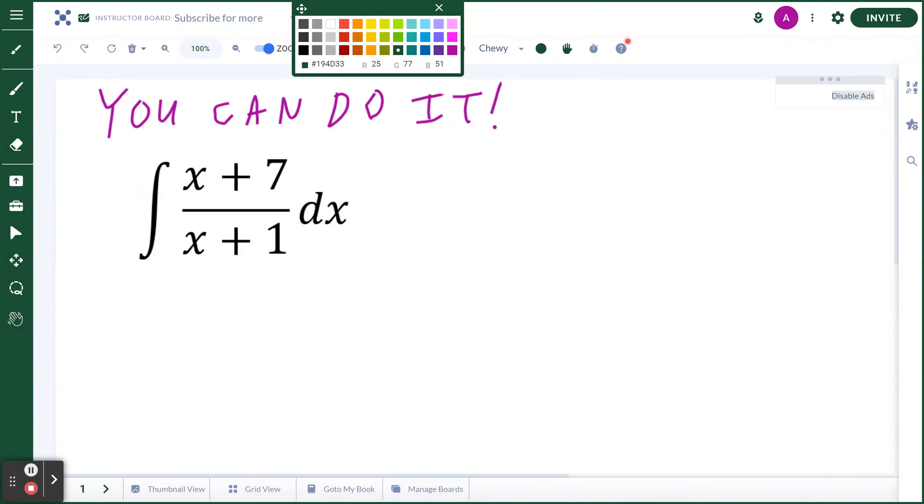Hi everyone, let's take a look at the following example: find the antiderivative of (x+7)/(x+1) with respect to x. Step number one, you have to look at this and break it down as a sum of two parts.